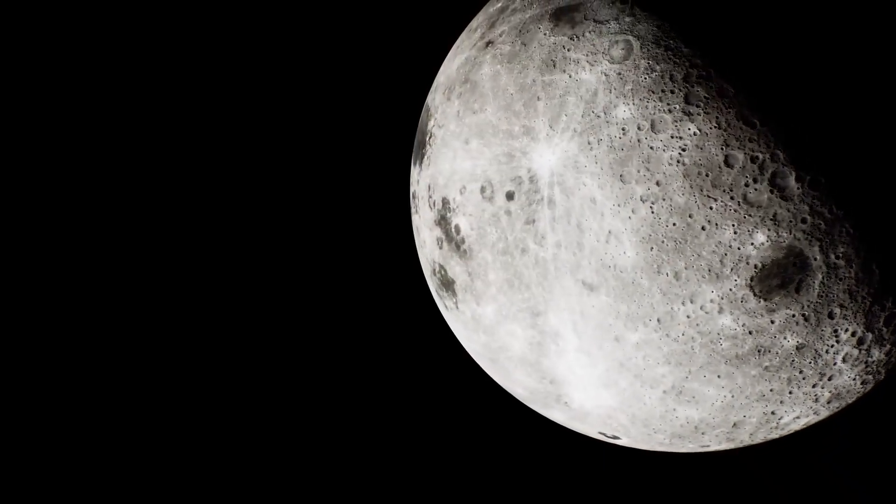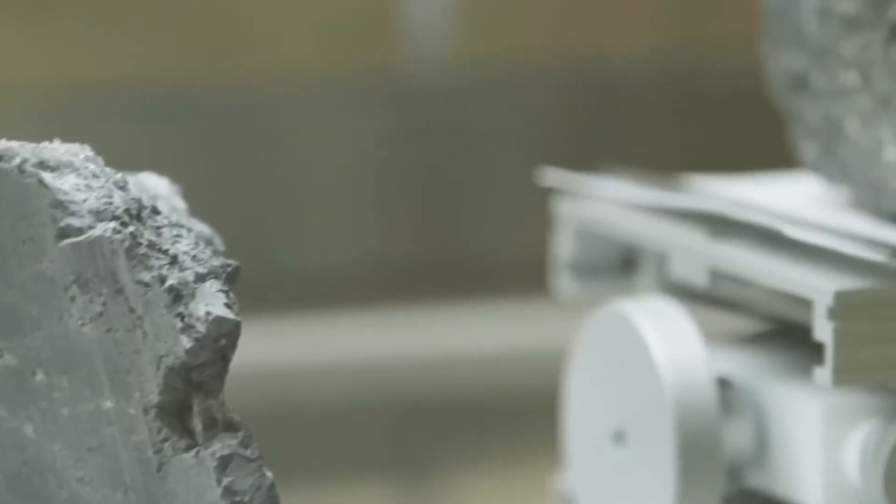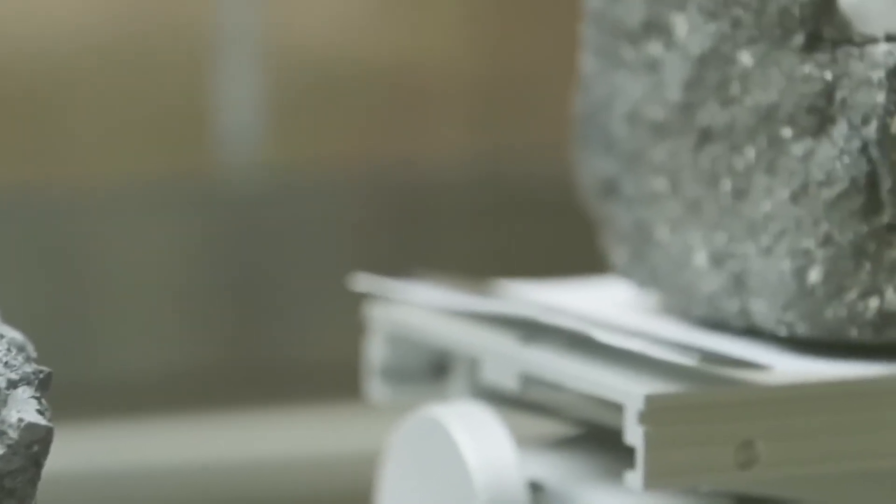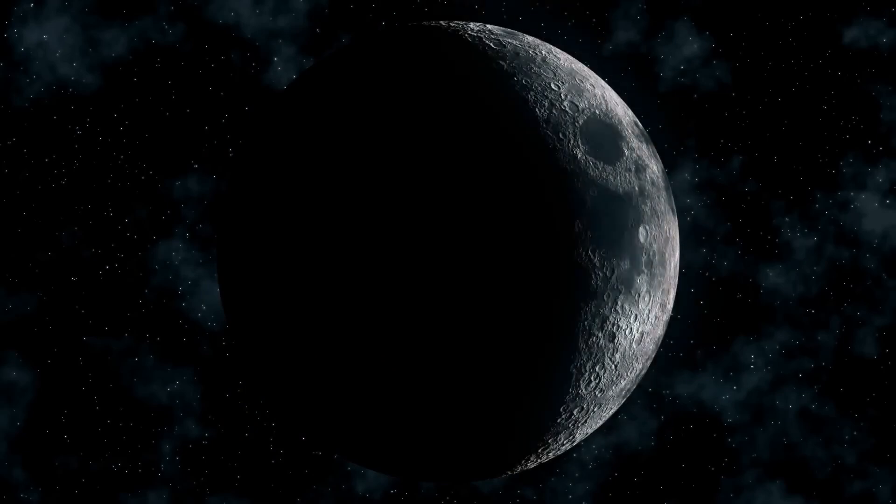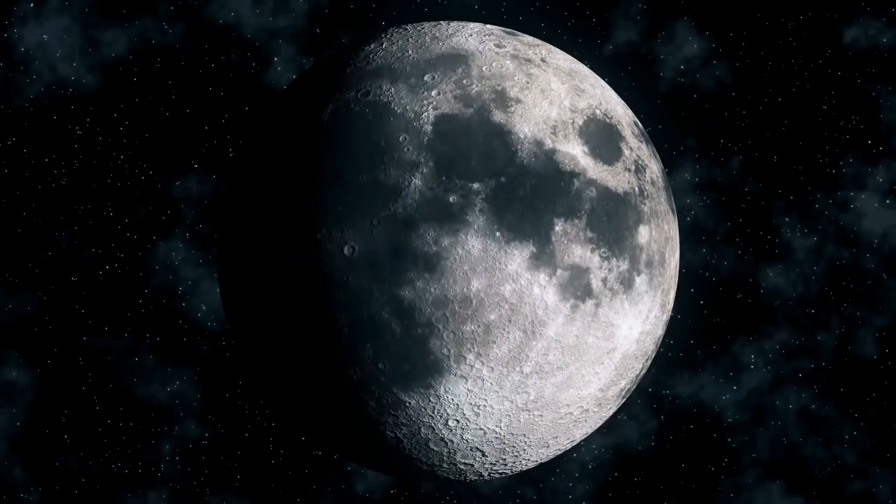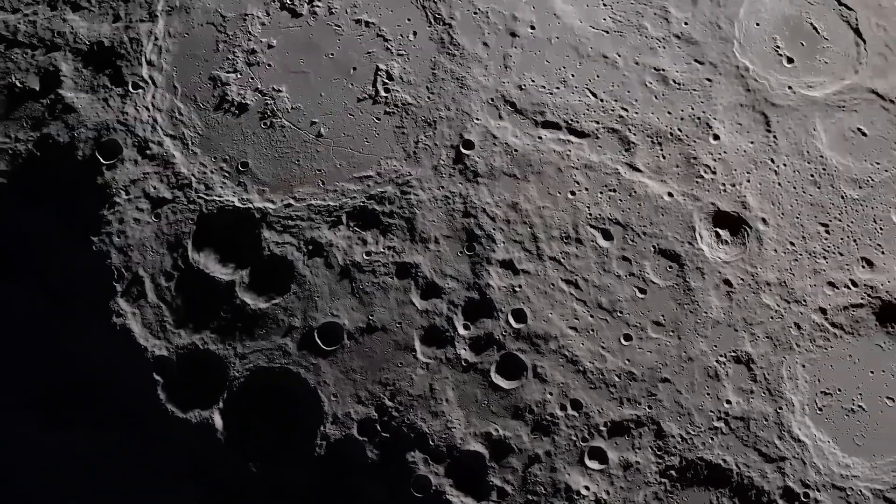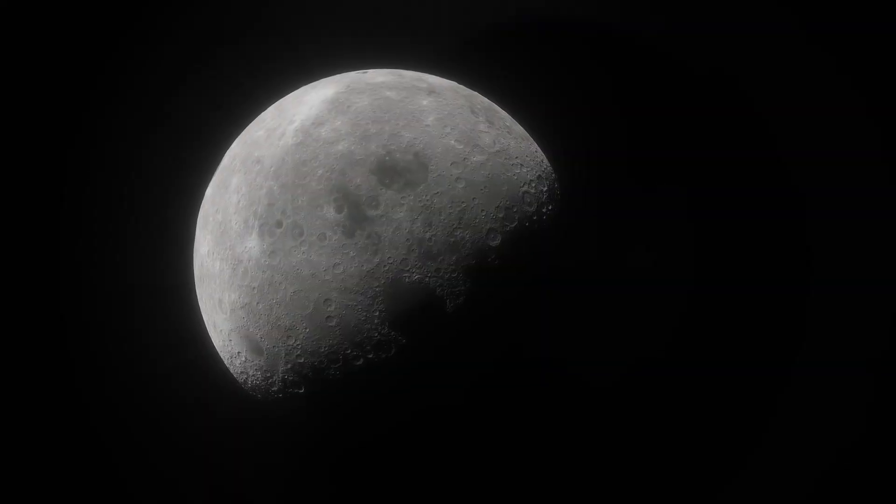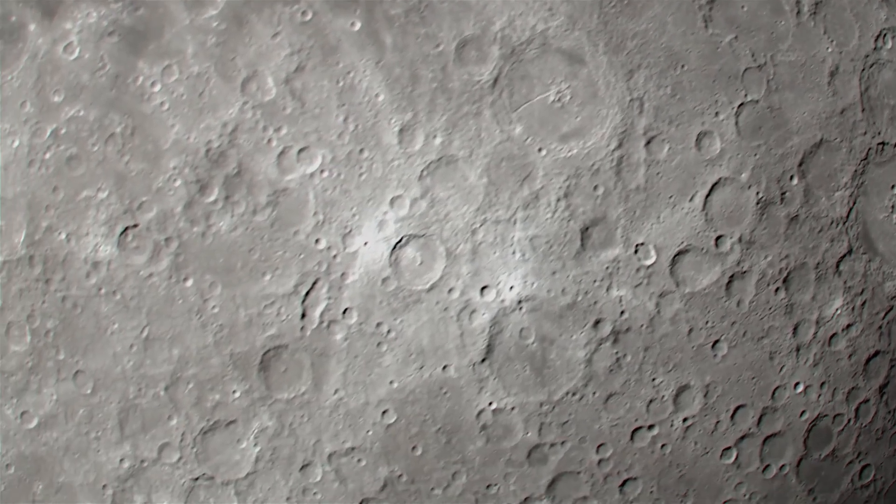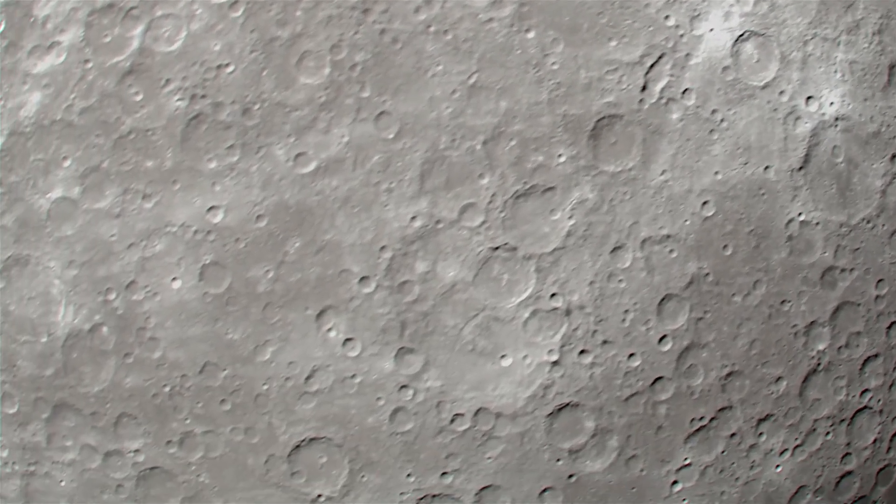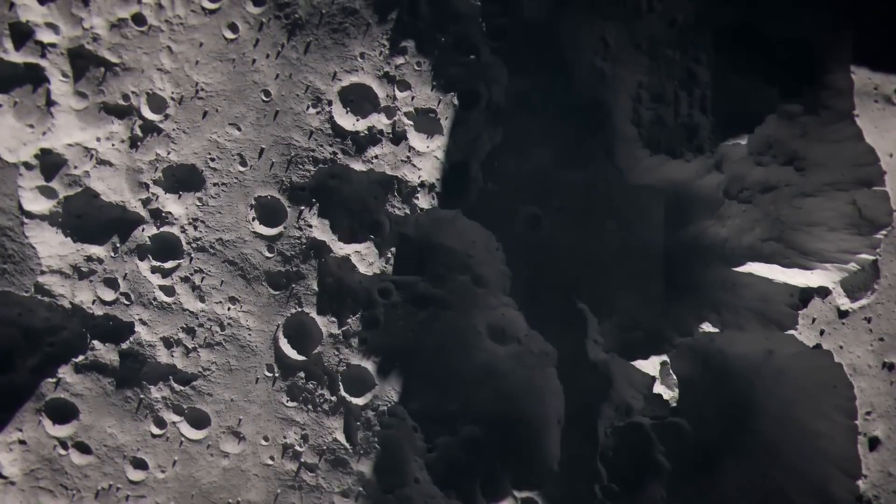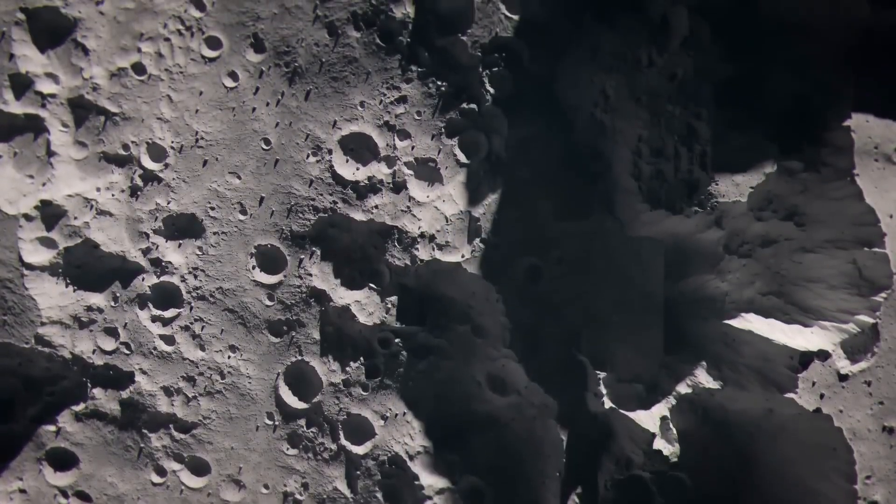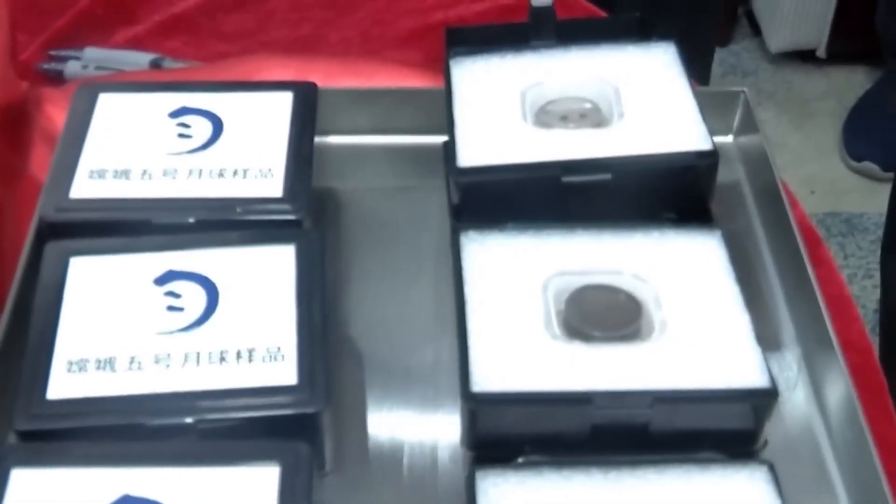These volcanic samples were only two billion years old, a full billion years younger than any lunar rock brought back by the Apollo missions. That means volcanic activity on the moon lasted far longer than anyone expected. We thought the moon was geologically dead. Now we know it stayed alive long after Earth's dinosaurs walked the planet. But here's the twist. This isn't just about lava or craters. Because inside those volcanic rocks was something else, something new, something that had never been seen before.